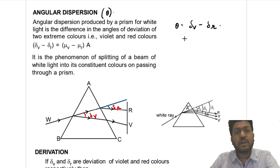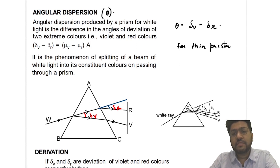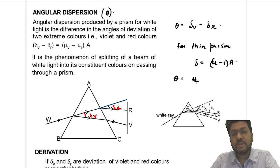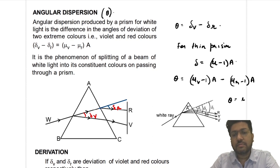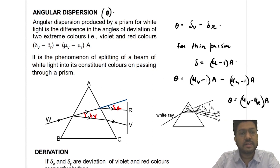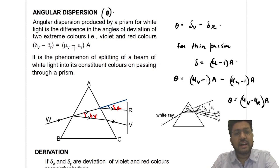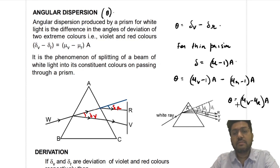We will derive the formulas only for thin prism. For thin prism, deviation is given by (μ − 1)·A. So θ can be written as δ_v = (μ_v − 1)·A minus δ_r = (μ_r − 1)·A. From this, you will get θ = (μ_v − μ_r)·A. So angular dispersion θ is the angle between the red and the violet rays, or the difference of the deviation of violet and red rays, and it equals (μ_v − μ_r)·A for thin prisms.